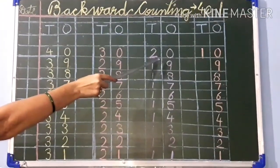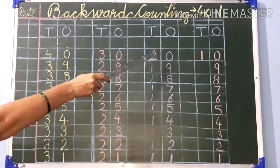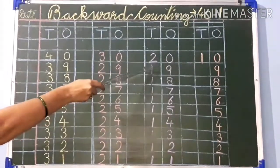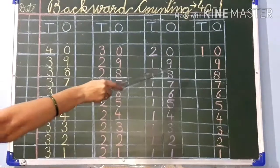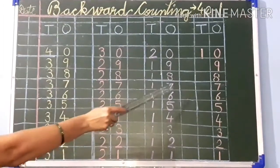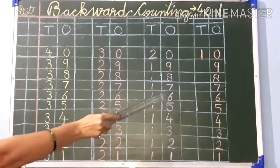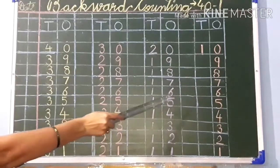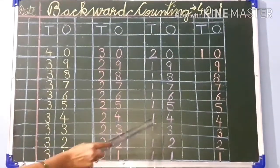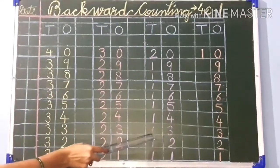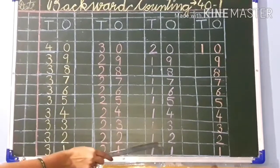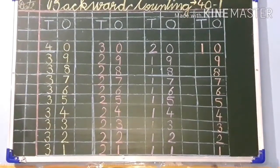And start counting from 20: 20, 19, 18, 17, 16, 15, 14, 13, 12, 11.